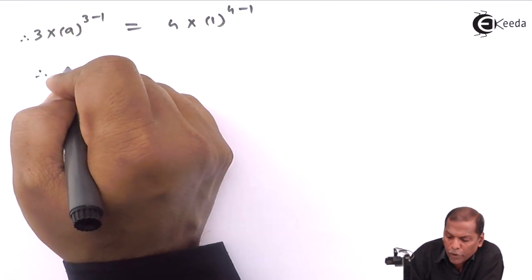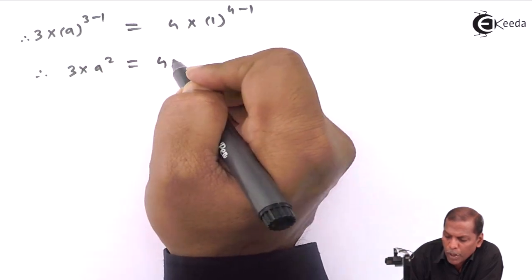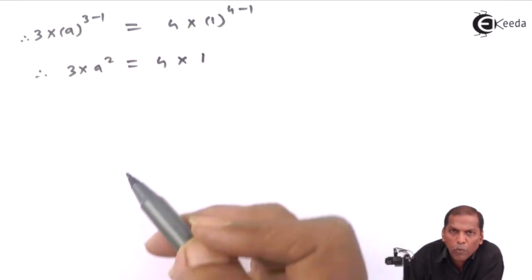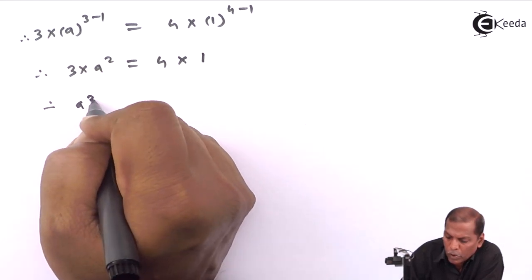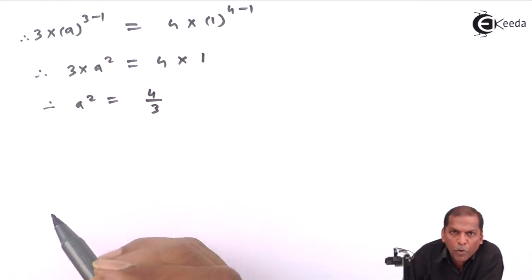Therefore, the next step will be 3 times a squared is equal to 4 times 1. Therefore, a squared is equal to 4 upon 3.